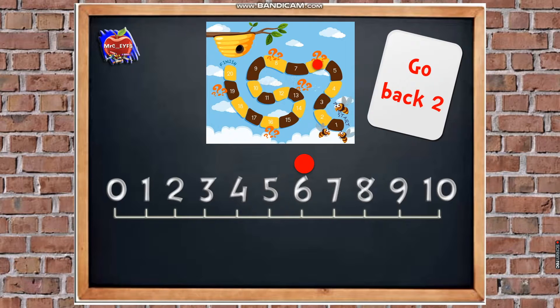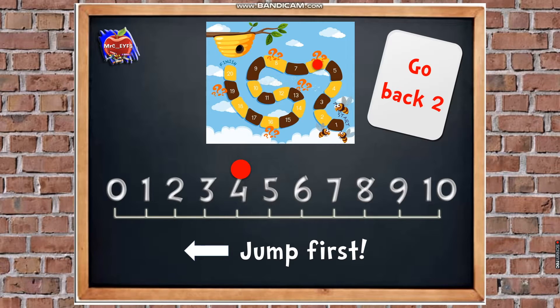So on our number line, we're going to do 2 jumps backwards. But remember, we have to jump first, just like when we were doing our counting on with our adding. We need to jump first. But this time, we're jumping backwards. So the arrow there is helping us. It's pointing the right way to go. But we jump first. Are you ready? So together, let's do 2 jumps. Are you ready? So we're going to go 1, 2. Excellent. So that means on my game, I would have to move back to number 4 on the board.